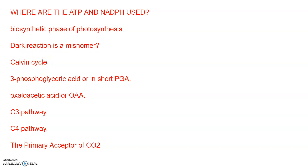The use of radioactive carbon-14 in algae photosynthesis studies led to the discovery that the first carbon dioxide fixation product was a three-carbon organic acid. Calvin also contributed to working out the complete biosynthetic pathway, and hence it is called the Calvin cycle after him. The first product identified was 3-phosphoglyceric acid, or PGA in short.